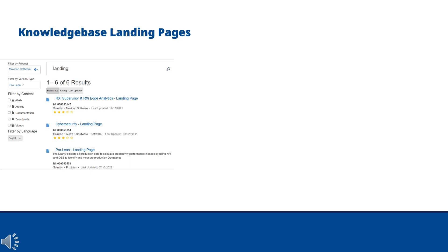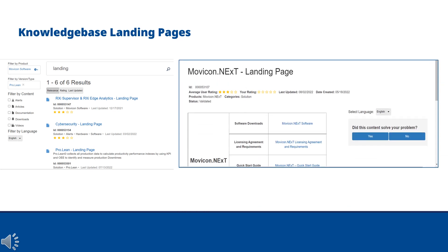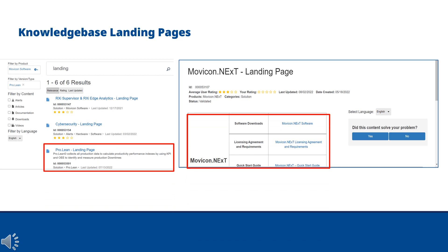A key feature of Emerson's knowledge base are landing pages. A landing page serves as a great starting point to see a vast amount of key information all in one place, rather than searching for specific titles or obscure items in the knowledge base. To find product landing pages, filter to the product you want, then type "landing" in the search field. This example shows the landing page for Prolean and MoVecon.next.